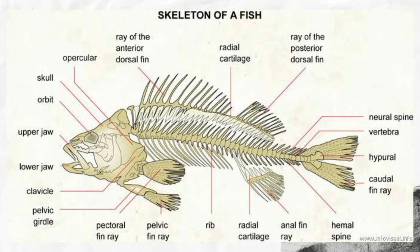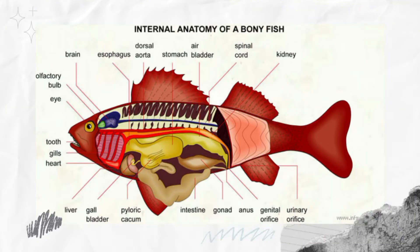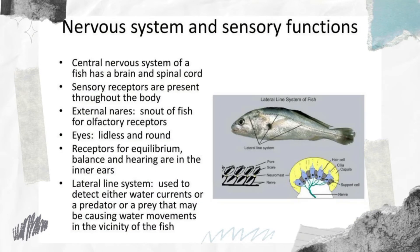The skeleton of bony fishes is made of bone and cartilage. The vertebral column, cranium, jaw, ribs, and intramuscular bones make up a bony fish's skeleton. The skeleton of a bony fish gives structure, provides protection, assists in leverage, and along with the spleen and the kidney is the site of red blood cell production.